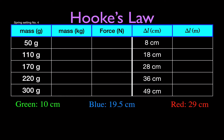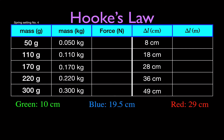Here is the data table from the simulation: 50 g / 8 cm, 110 g / 18 cm, 170 g / 28 cm, 220 g / 36 cm, and 300 g / 49 cm. Since the spring constant is in newtons per meter, we need to convert masses to newtons and lengths in centimeters to meters. First, I'll convert grams to kilograms by dividing by 1,000: 50 g becomes 0.05 kg, 110 g becomes 0.110 kg, and so on up to 300 g becoming 0.3 kg.